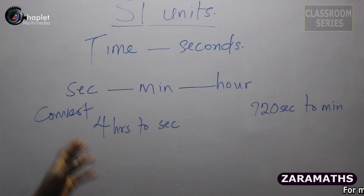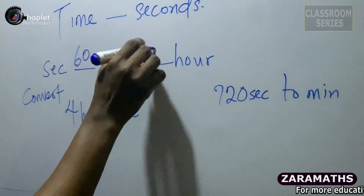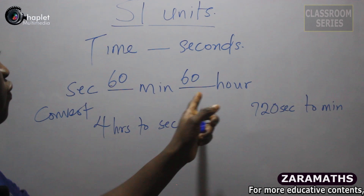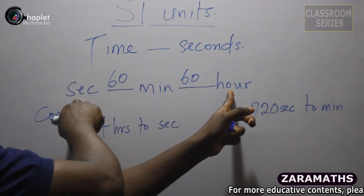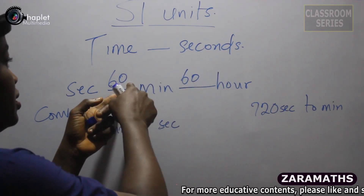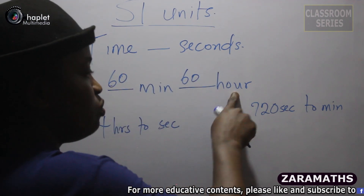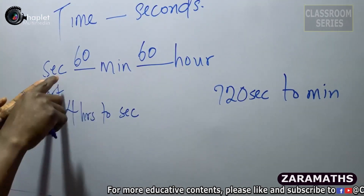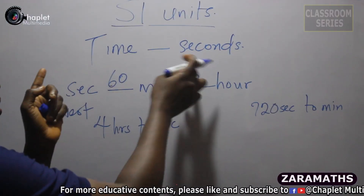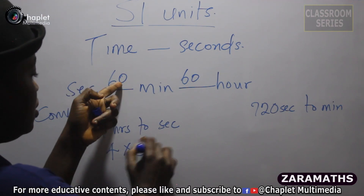The SI unit of measuring time is seconds. To measure time we are going to use 15 minutes as an example. 60 seconds makes one minute, and 60 minutes makes one hour. Now we want to convert 4 hours to seconds. From hours to seconds you are moving backward, so you multiply. We multiply by 60 and 60, meaning 3600 seconds is one hour. So we multiply by 3600.